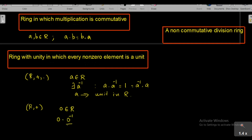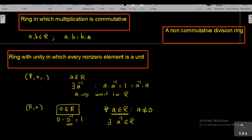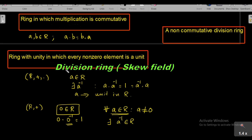In a ring, 0 always belongs to R as the additive identity, but there is no element 0⁻¹ such that 0 · 0⁻¹ gives the multiplicative identity 1 in R. Therefore the additive identity cannot have a multiplicative inverse. If for every A in R with A not equal to the additive identity, there exists A⁻¹ in R, then each non-zero element A in R is a unit in R.